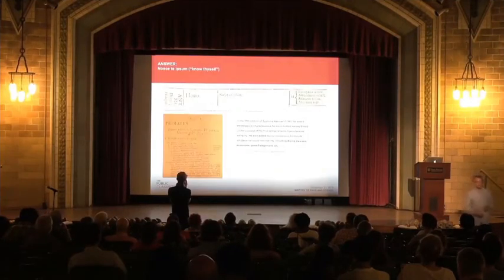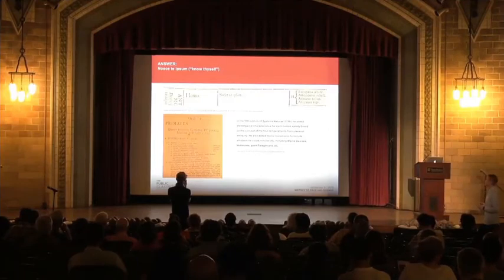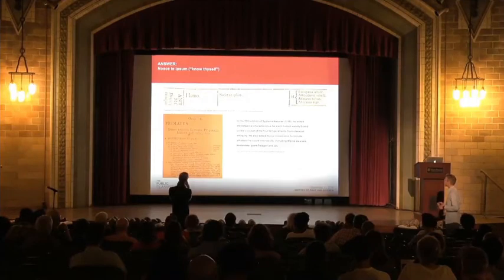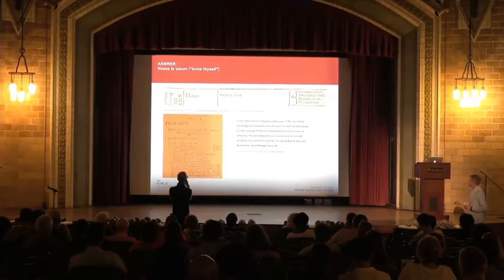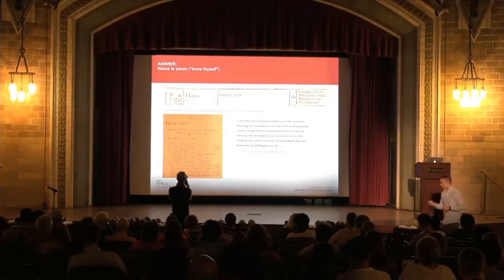Know thyself. No definition given, no list of traits that you could identify, but rather just the phrase 'know thyself.' He later added to the definition when he included more types of Homo sapiens in the 10th edition of the Systema Naturae. He included, for example, Homo monstrosus — that would include whatever he couldn't classify in the other four races, which included Alpine dwarves, Hottentots, Giant Patagonians, and other oddities.